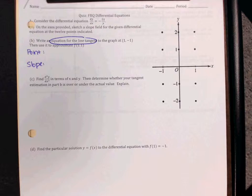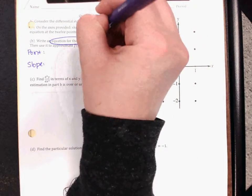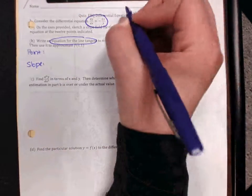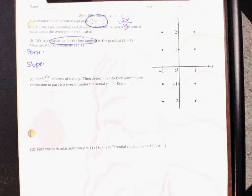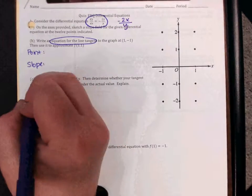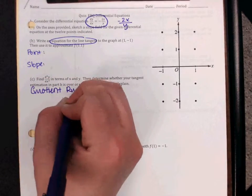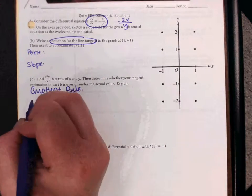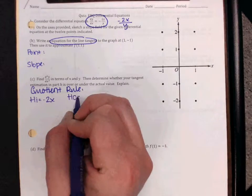But when you get to part C, if you want to take the second derivative of this, you're going to need to use quotient rule. So the way that I would break that up is negative 2x on top and y on bottom. So that way down here when you do quotient rule, you can break your derivative up. So it's going to be high as negative 2x and ho is going to be y.